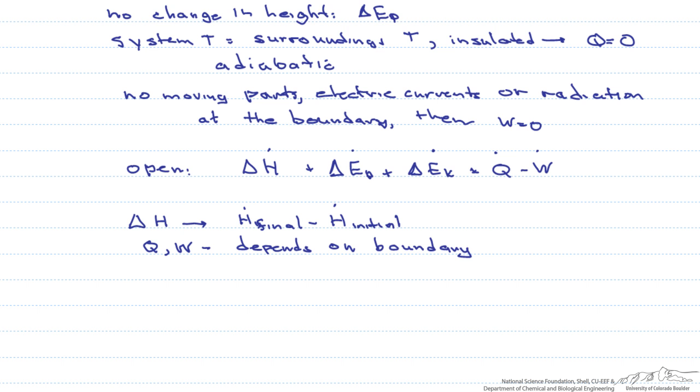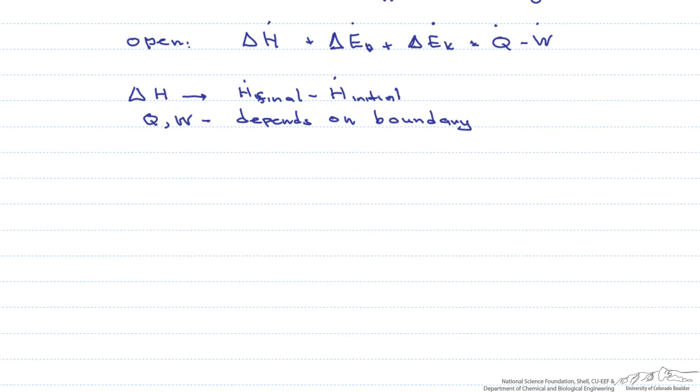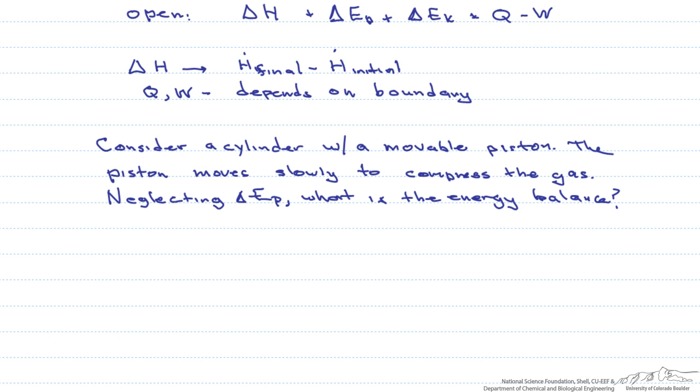Why don't we look at an example. If we have a cylinder with a movable piston, which moves slowly to compress a gas, we can neglect the potential energy. What is the energy balance? First of all, is this a closed system? Yes, there is no mass escaping. And the initial and final states are stationary.